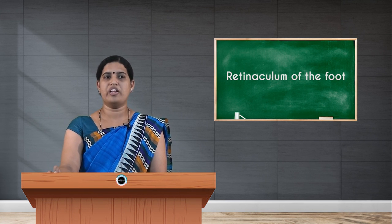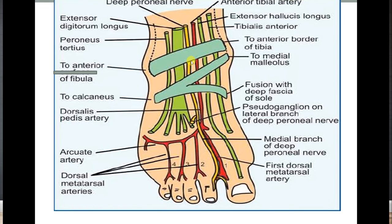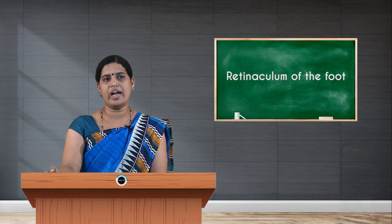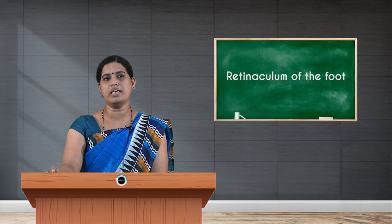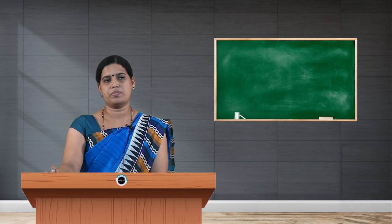The applied aspect: a strain of the inferior extensor retinaculum can occur due to sudden load, weight-bearing, a simple slip, fall, or twisting of the ankle. You can see in the slide the superior extensor retinaculum and the Y-shaped inferior extensor retinaculum, along with the structures passing deep to them. Thank you.